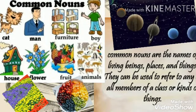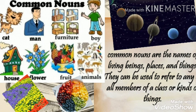Definition of common nouns. Common nouns are the names of living beings, places and things. They can be used to refer to any or all members of a class or kinds of things. Listen carefully — they can be used to refer to any or all members of a class or kinds of things.